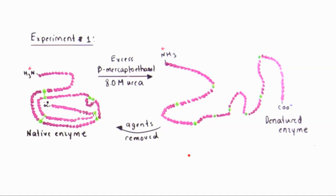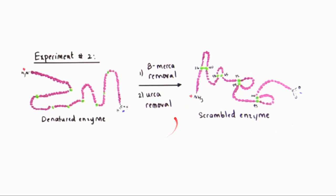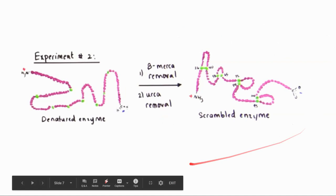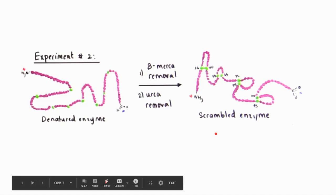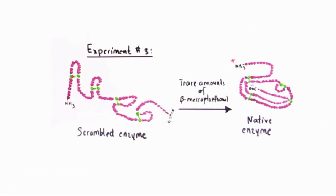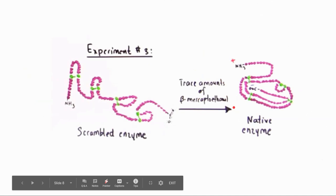This confirmed that the native state depends only on the amino acid sequence and conditions. In the second part, he removed beta-mercaptoethanol first and then urea after some time, causing the tertiary structure to form with the incorrect secondary structure — the wrong disulfide bonds formed and the protein did not revert to its native state. When he then applied trace amounts of beta-mercaptoethanol to this scrambled enzyme to break those disulfide bonds, the protein reverted back to its native state, providing even more evidence for the hypothesis.